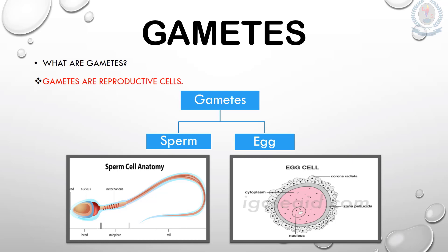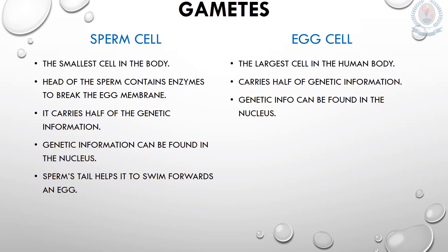For humans to reproduce, a sperm cell and an egg cell will need to come together before a new life can be formed. Both sperm cell and egg cell have some common features. The sperm cell is the smallest cell in the body. The head of the sperm contains enzymes. These enzymes will help to break down the outer coating of the egg membrane, so the sperm can enter the egg cell.